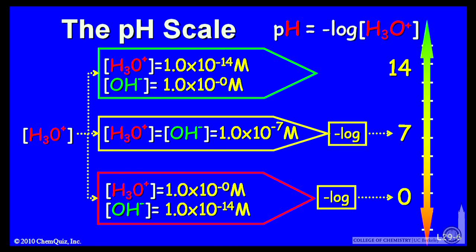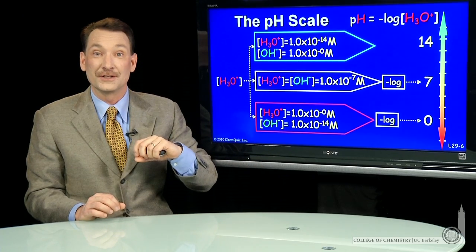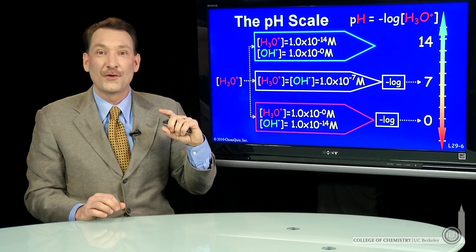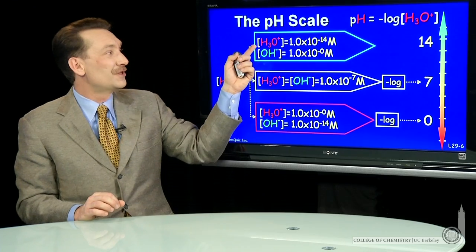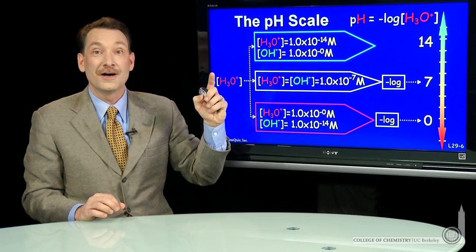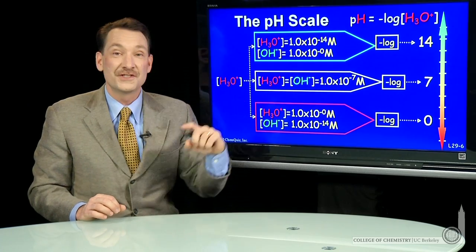What if the H3O+ concentration is low? If the H3O+ concentration is low, then the OH- must be high. So that's a basic solution. Here's H3O+ 10 to the minus 14. So the pH of this solution is minus log of 10 to the minus 14, which is 14.